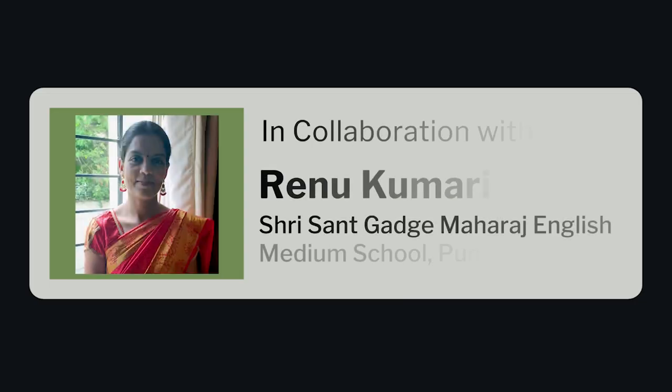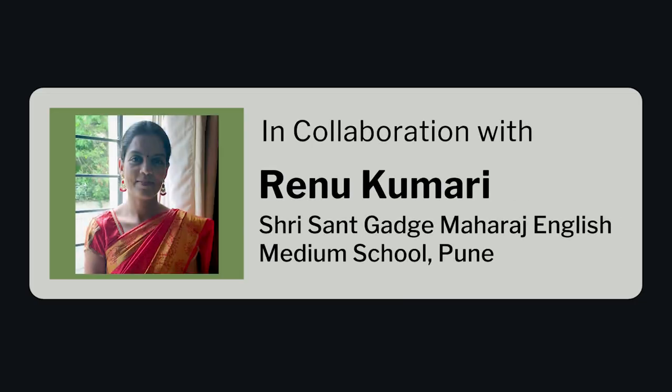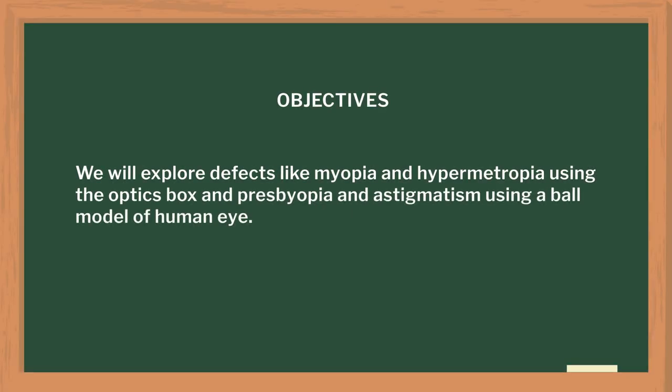Hello teachers. In this video we will be looking at the concept of defects in vision. This lesson plan was made by Renu Kumari Ma'am. She has conducted these activities in her classroom and shared her experience with us. This topic is usually taught to 10th standard students right after the structure and function of human eye and how lenses work. We will explore defects like myopia and hypermetropia using an optics box, and presbyopia and astigmatism using the ball model of the human eye. So let's begin.